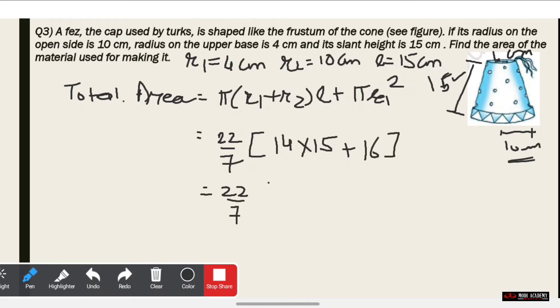When we do 14 into 15, we get 210. Plus 16 gives us 226. So the answer equals 22/7 × 226. When we multiply 22 into 226 and divide by 7, we get 710 and 2/7 cm², which can be written as approximately 710.29 cm².